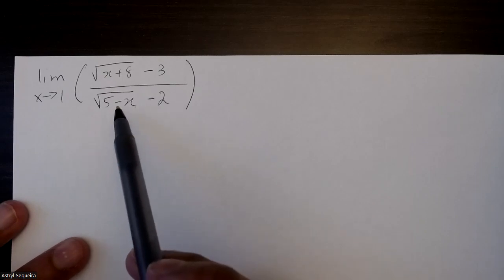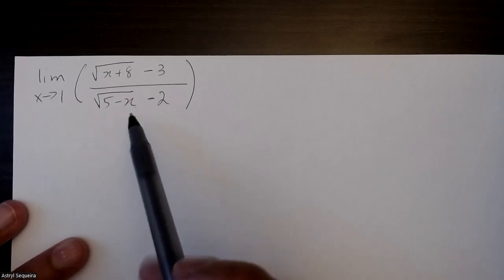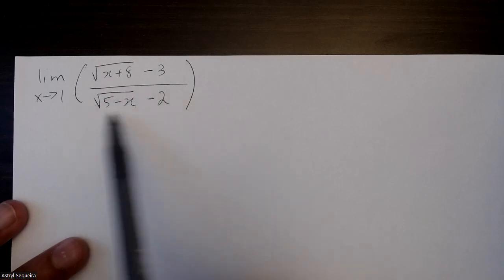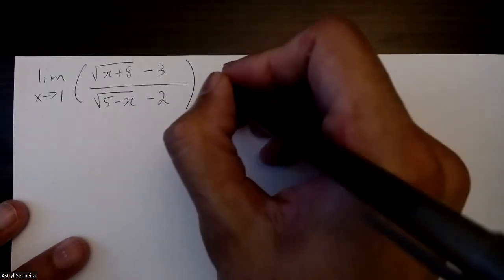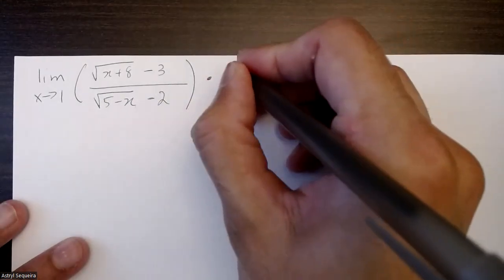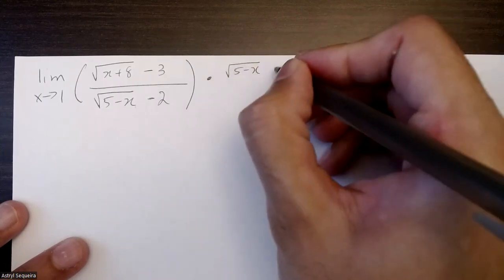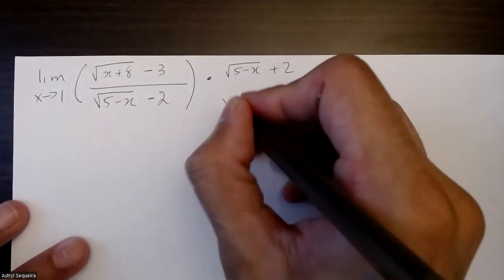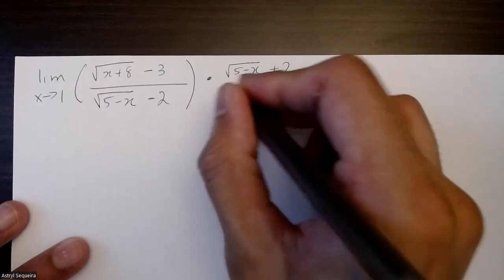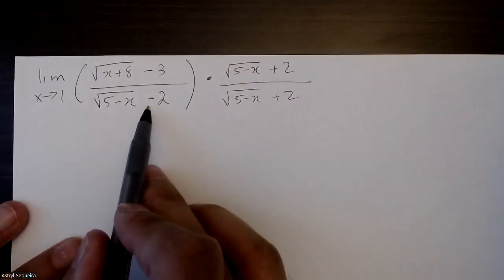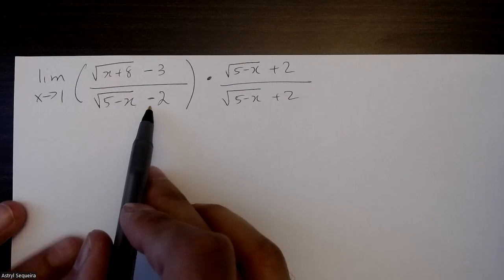Anytime you want to simplify a radical equation, you have to rationalize. I'm going to start by rationalizing the bottom. I'm going to multiply the top and bottom by root of 5 minus x plus 2. All you have to do is change the sign outside the square root, and that's going to rationalize it.